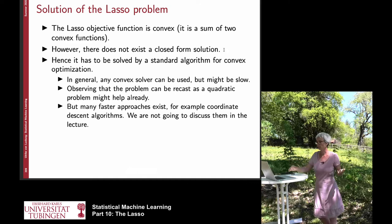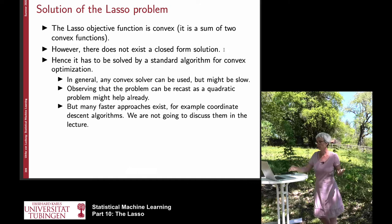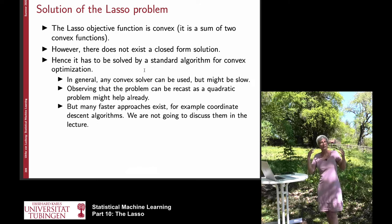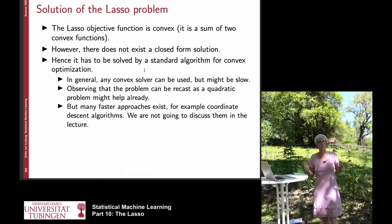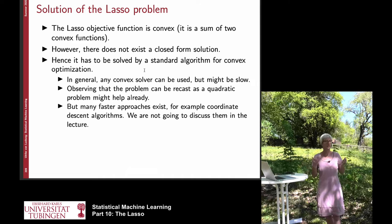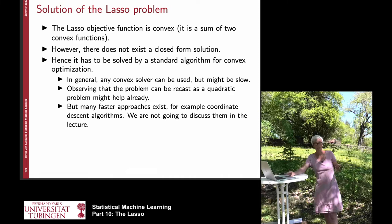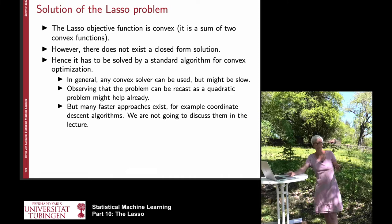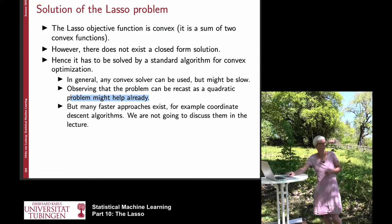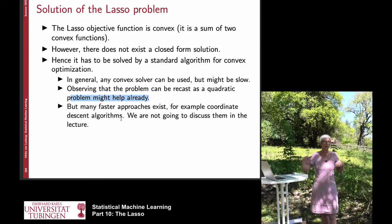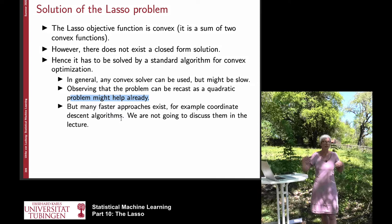Typically what you do is use your favorite optimization solver, plug this optimization problem in, and find the solution. There might be solvers that are more suited to this kind of problem, but this is something we are not going to discuss in this lecture. If you want to understand what kind of solvers are most suitable for which kind of optimization problems, you would need to attend an optimization lecture. In general you can use any convex solver — it is going to work, but it might be slow because it is not adapted to your problem's particular structure. Coordinate descent algorithms, for example, work better on the LASSO problem.